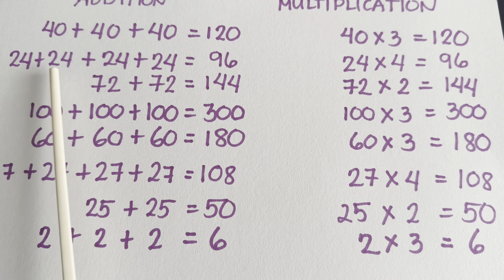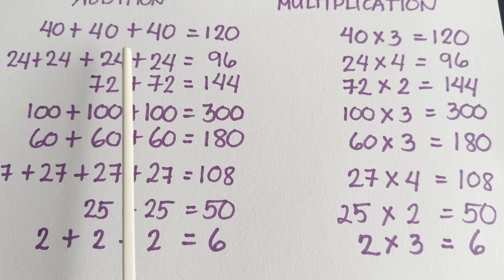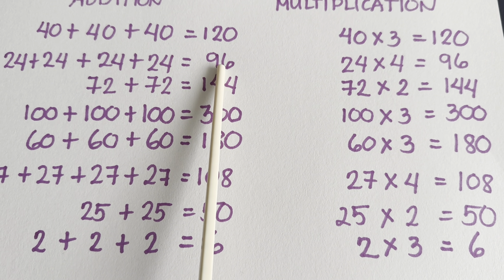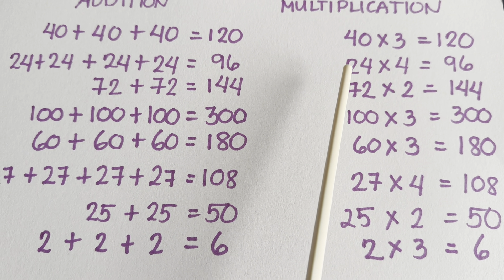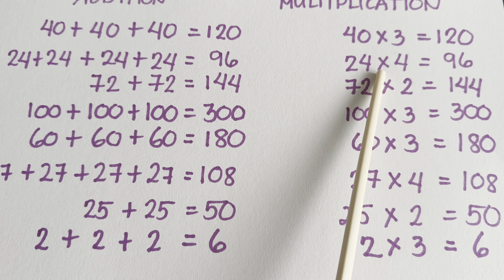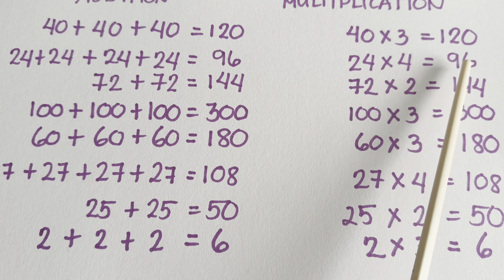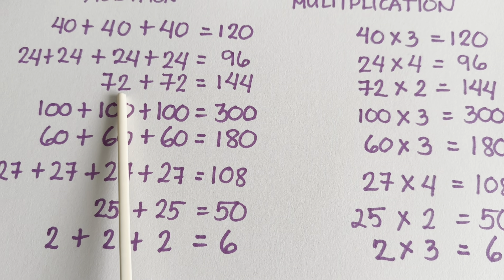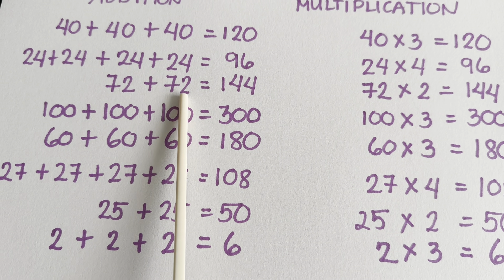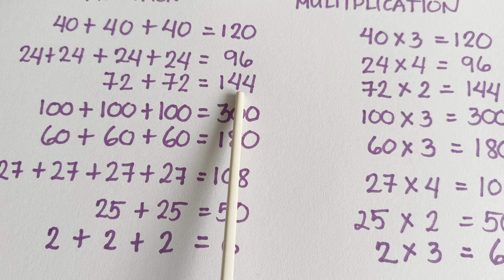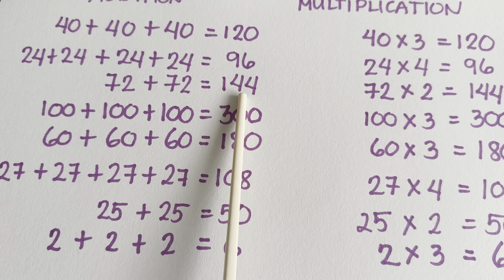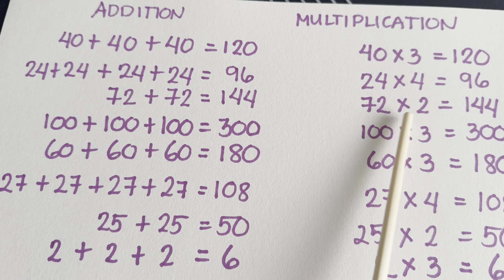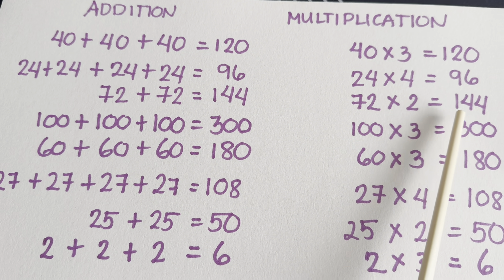24 plus 24 plus 24 plus 24 is equals to 96. In Multiplication, 24 multiplied by 4 is equals to 96. Let's try another one: 72 plus 72 is equals to 144. In Multiplication, 72 times 2 is equals to 144.